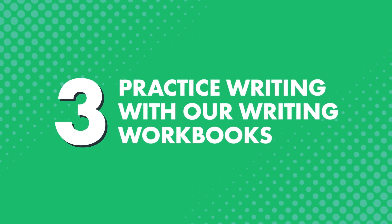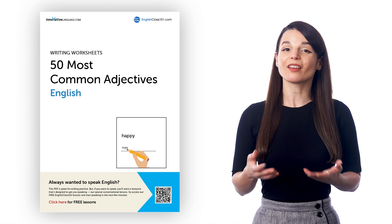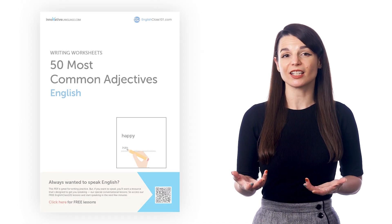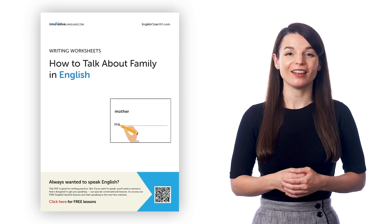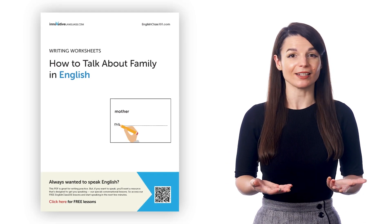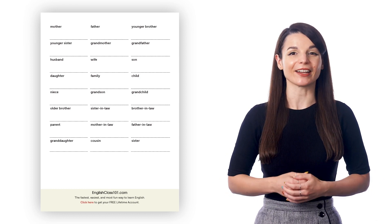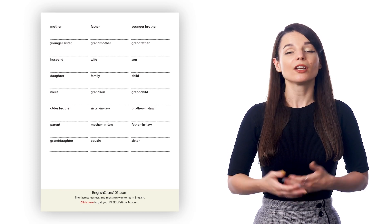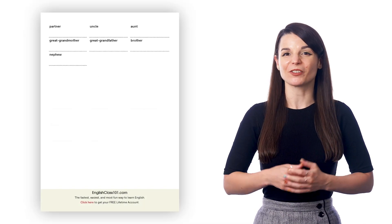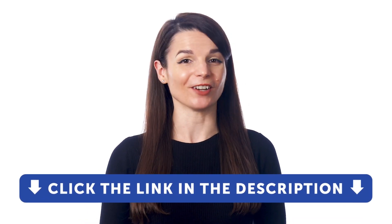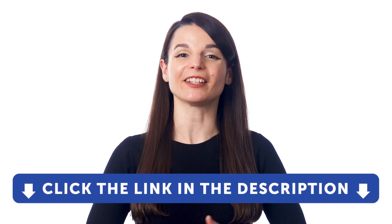Number three: practice writing with our writing workbooks. With our PDF workbooks, you'll learn to write words and phrases around specific themes like must-know adjectives, talking about your day, family, and more. These are specifically designed to be printed out and written in. Inside you'll get the words, their translations, plus blank lines for you to practice writing out the words. In the last section of the workbook, you'll get tested on how well you know each word — you'll see just the translation, and your job is to write the word in the target language. Sign up for a free lifetime account to get access to these printable resources and our learning system. Just click the link in the description.